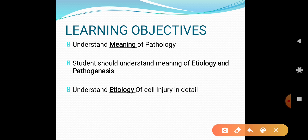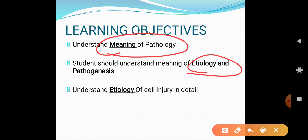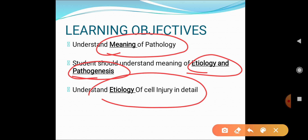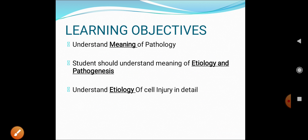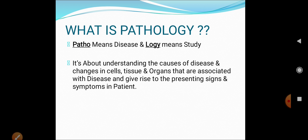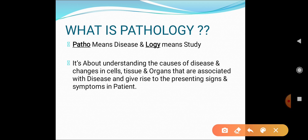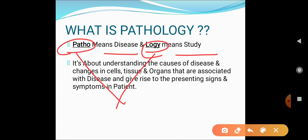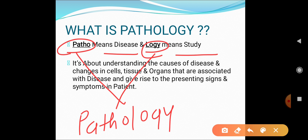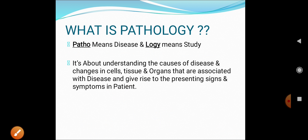Our learning objectives for today: first, to understand the meaning of pathology. The word 'patho' means disease and 'logi' means study — combine both and you get pathology. So pathology is the study of disease tissue. A student should also understand the meaning of etiology and pathogenesis as far as a particular disease is concerned.